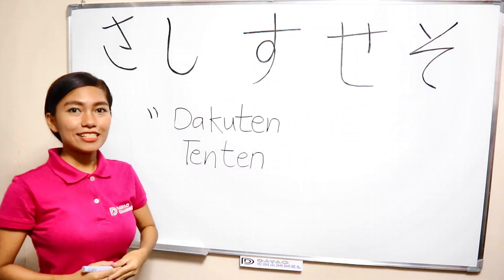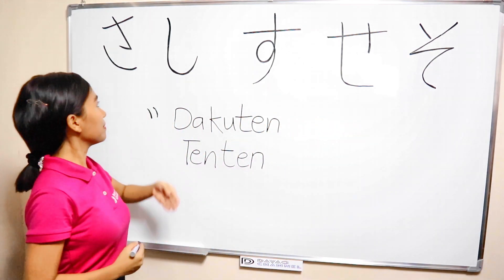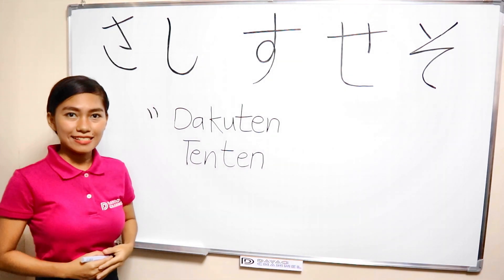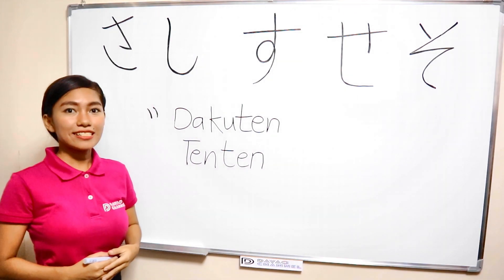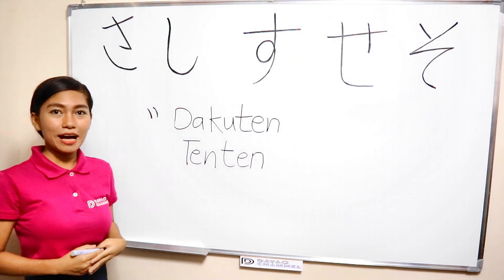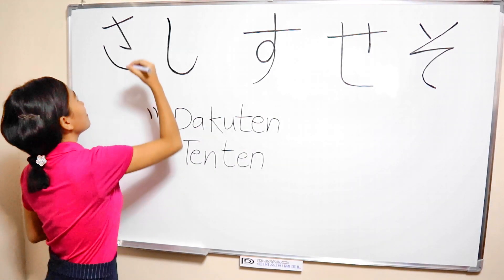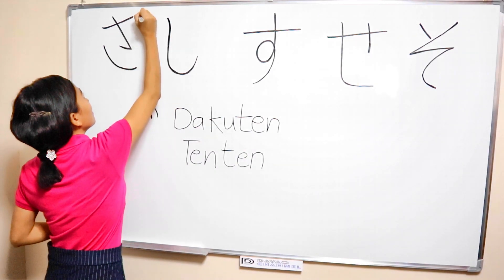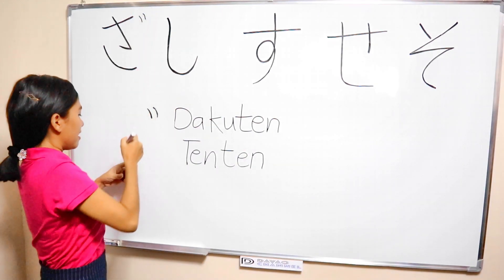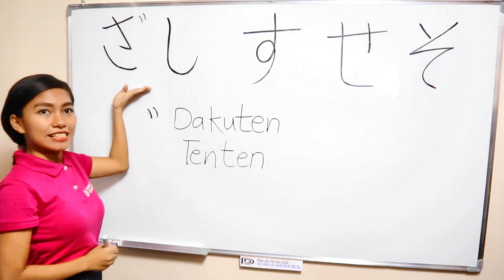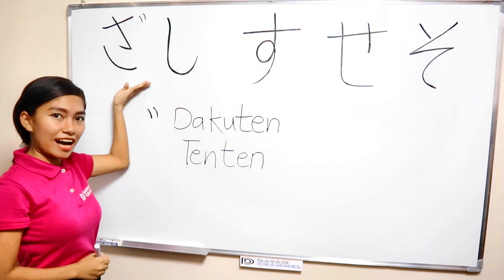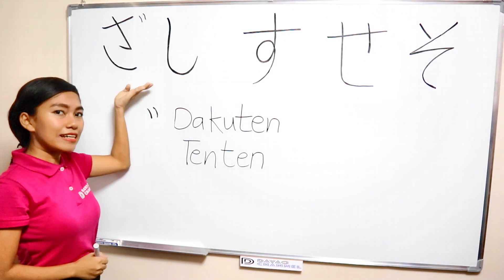First, let's start from sa. To make it za, just add a small two lines above the letter. And it becomes za, za, za.